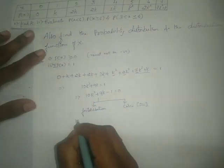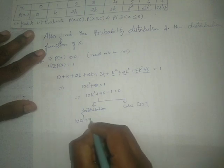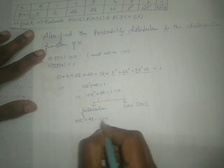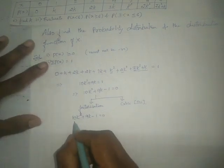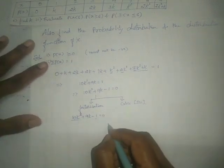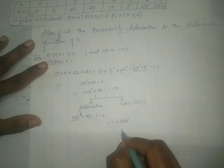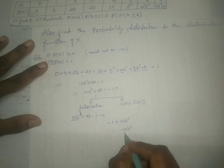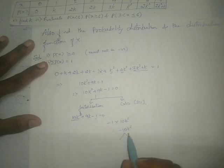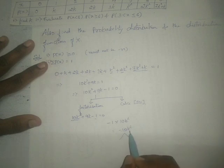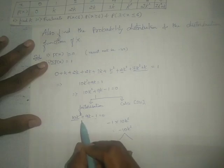By factorization: 10K squared plus 9K minus 1 equals 0. We multiply the coefficient of K squared by the constant: minus 1 times 10 equals minus 10K squared. We need two factors whose product equals minus 10K squared and whose algebraic sum equals the middle term, which is 9K.